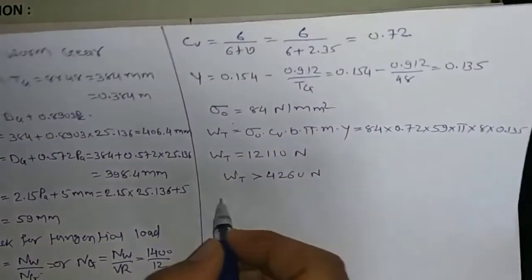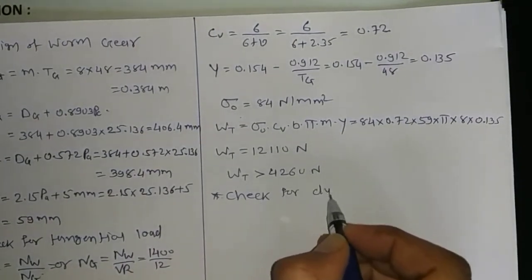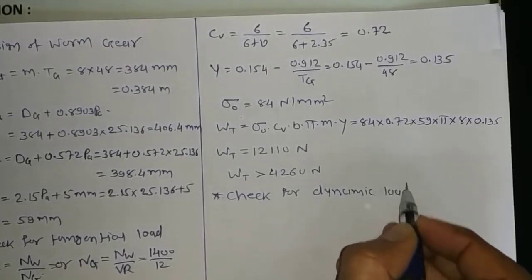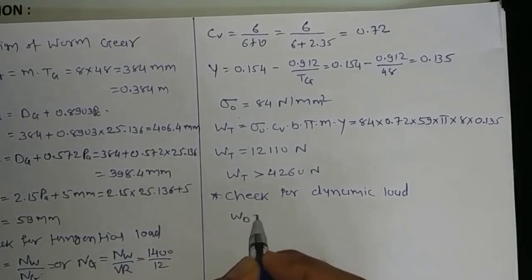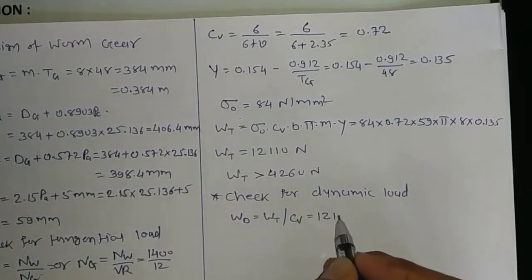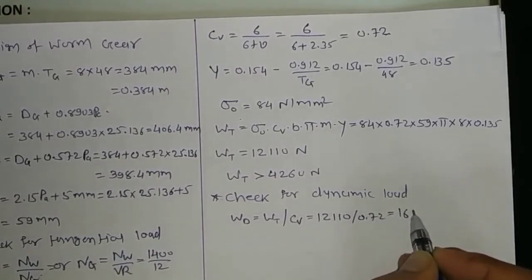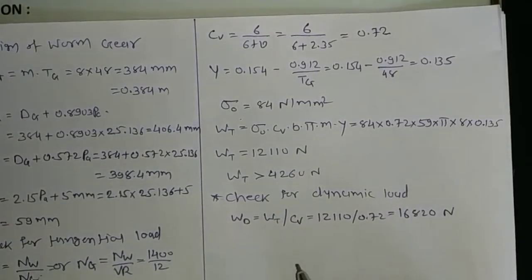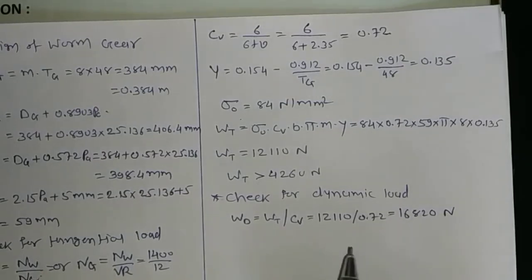Check for dynamic load: W_d = W_t / C_V = 12,110 / 0.72 = 16,820 N. This is more than the actual tangential load of 4,260 N. Therefore the design is safe from the standpoint of dynamic load.